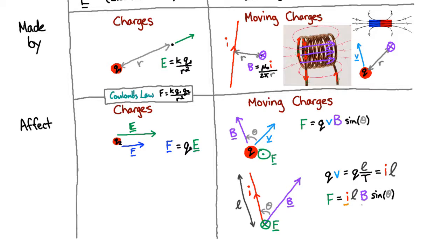So if the current is perpendicular to the magnetic field — if they're at right angles — then the force is just the current times the length of the wire times the magnetic field.